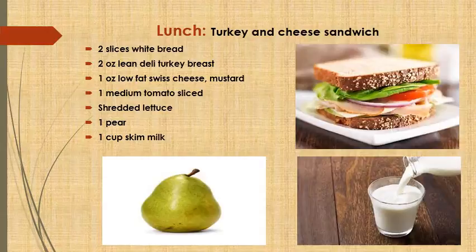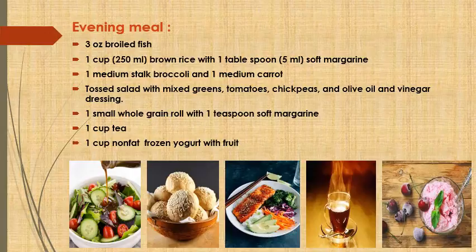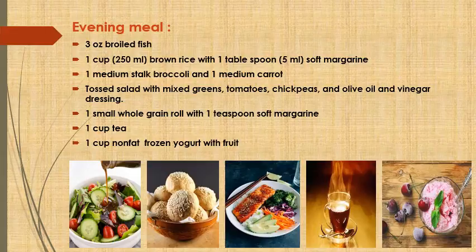Evening meal: three ounces of broiled fish, one cup of brown rice with one tablespoon of soft margarine, one low-sodium stock, broccoli and one medium carrot, tossed salad with mixed greens, tomatoes, chickpeas, olive oil, and vinegar dressing, one small whole grain roll with one teaspoon of soft margarine, one cup of tea, and one cup of non-fat frozen yogurt with fruits.